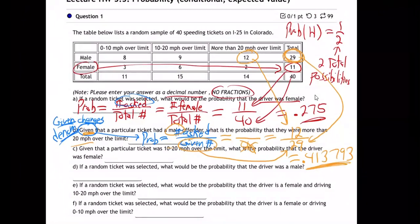Is anybody experiencing that — putting in four decimals and it's taking it? Yes — good, excellent. So just type in a bunch of decimals, don't worry about rounding. It's all good.